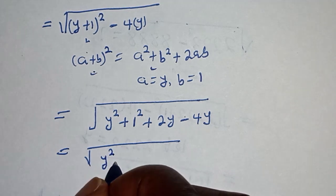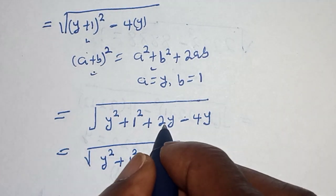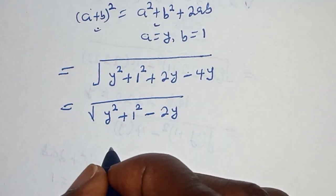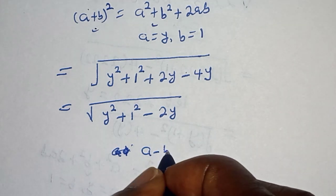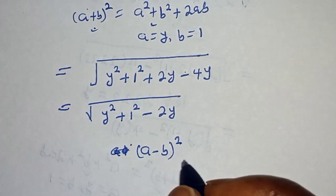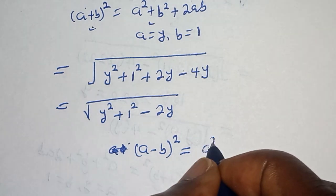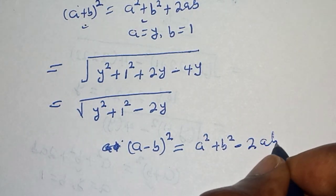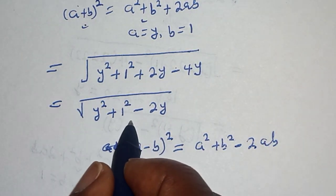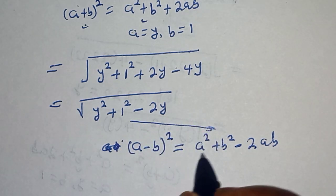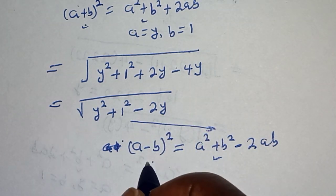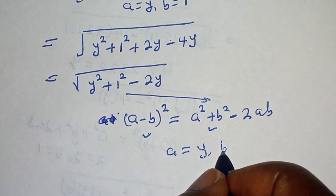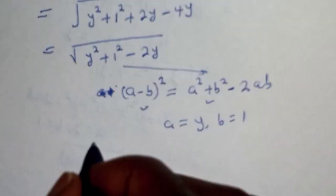This simplifies to square root of y squared plus 1 squared minus 2y. Also take note of this rule: a minus b squared is equal to a squared plus b squared minus 2ab. If you look at this expression, this matches that form, where a is equal to y and b is equal to 1.